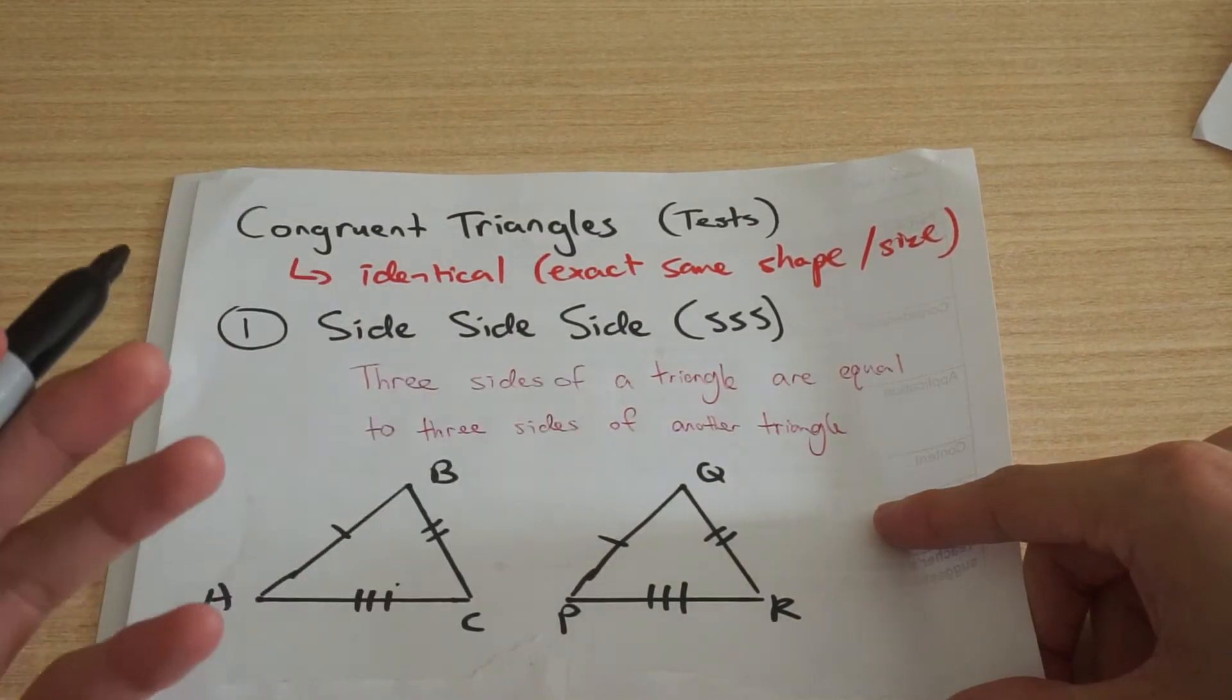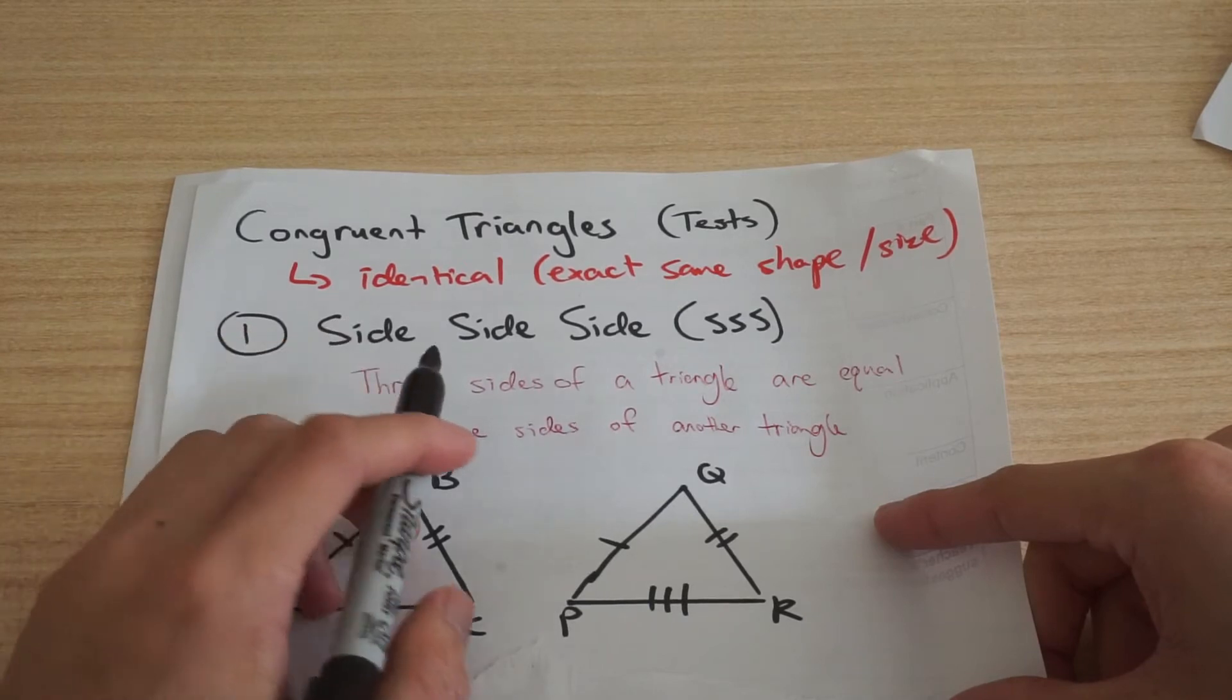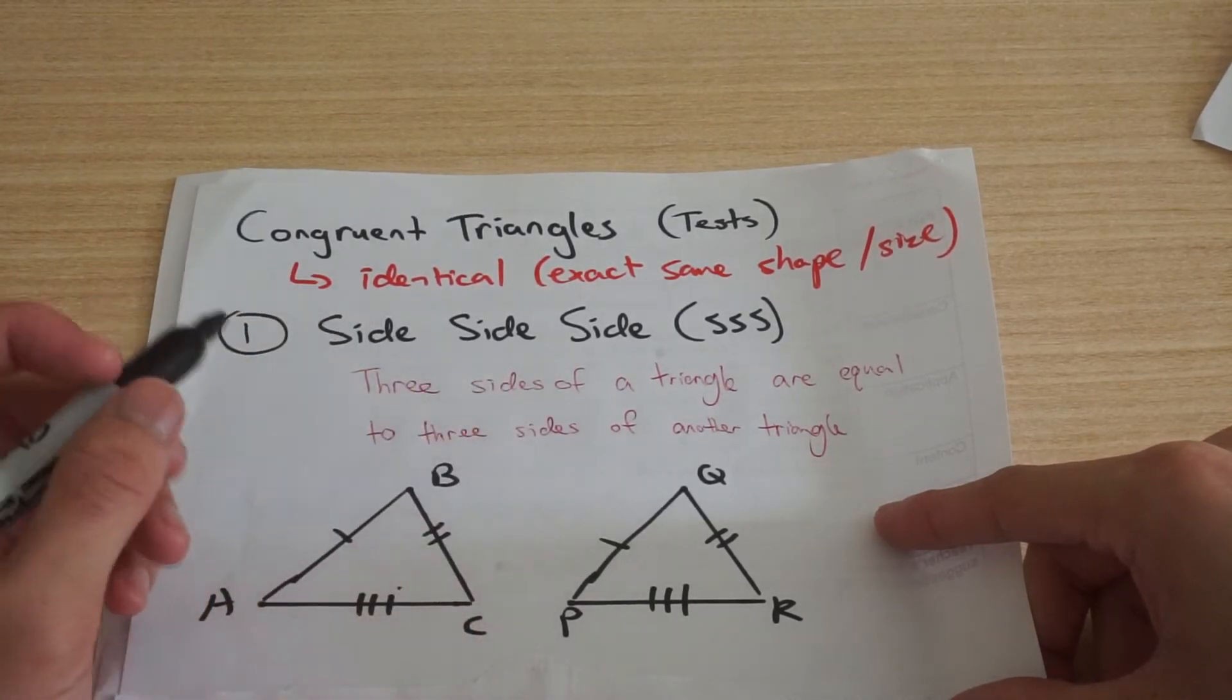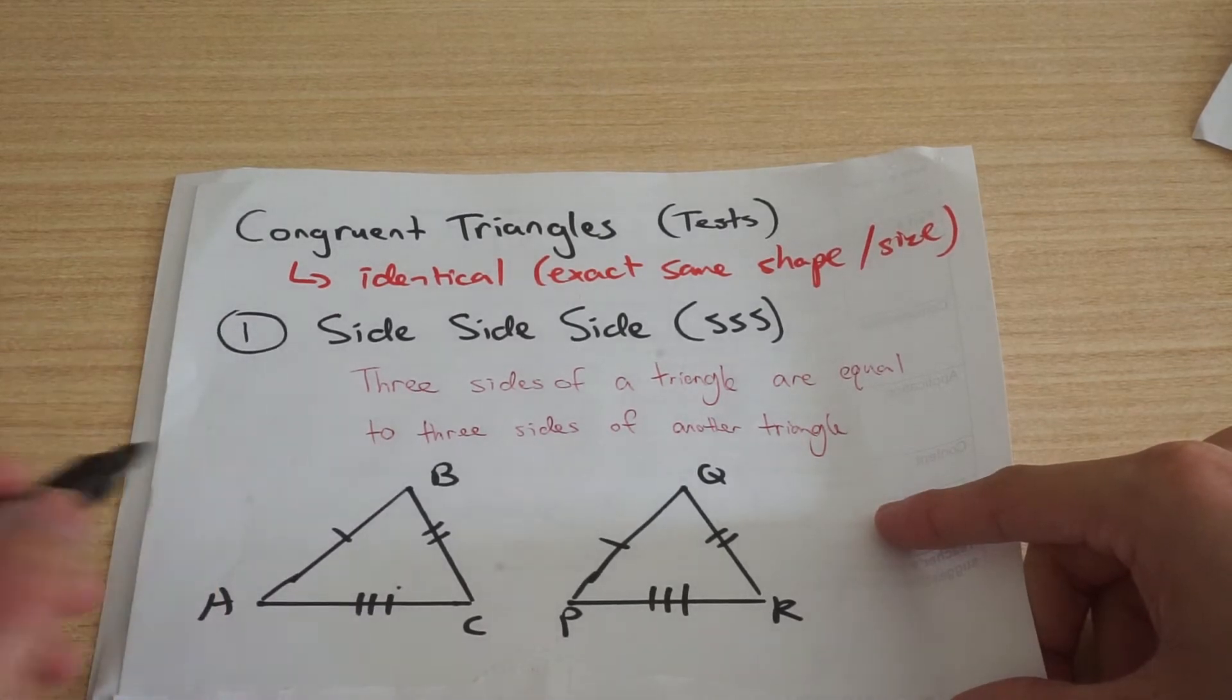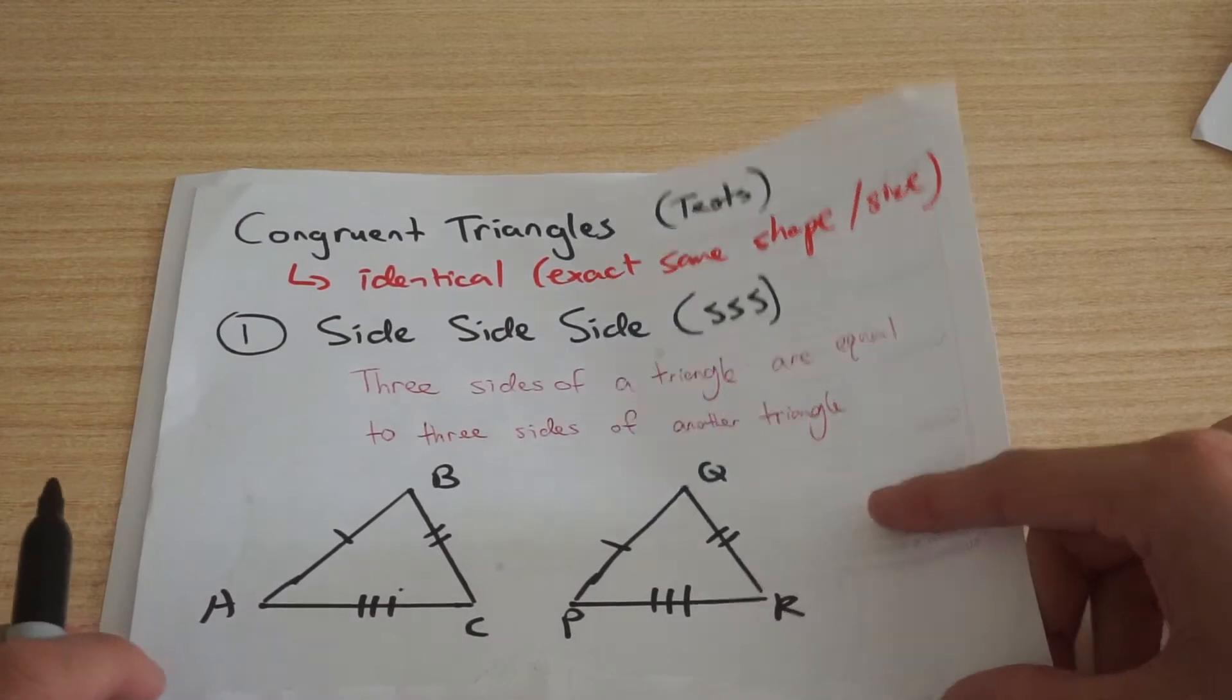So what are the tests? There are a couple of tests we want to use. The first one is side, side, side. So that's where the three sides of a triangle are equal to three sides of another triangle and that's fair enough that they'd be congruent or identical and we can abbreviate that to SSS.